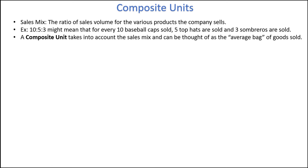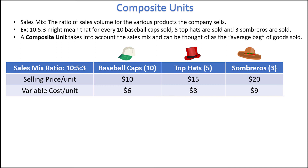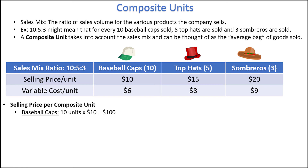Now, let's assume that we have the following selling price and variable cost per unit for the three products. We can find the selling price per composite unit first by focusing on one product at a time. For baseball caps, there are 10 caps in each composite unit and the selling price is $10 each, so 10 units times $10 is equal to $100.